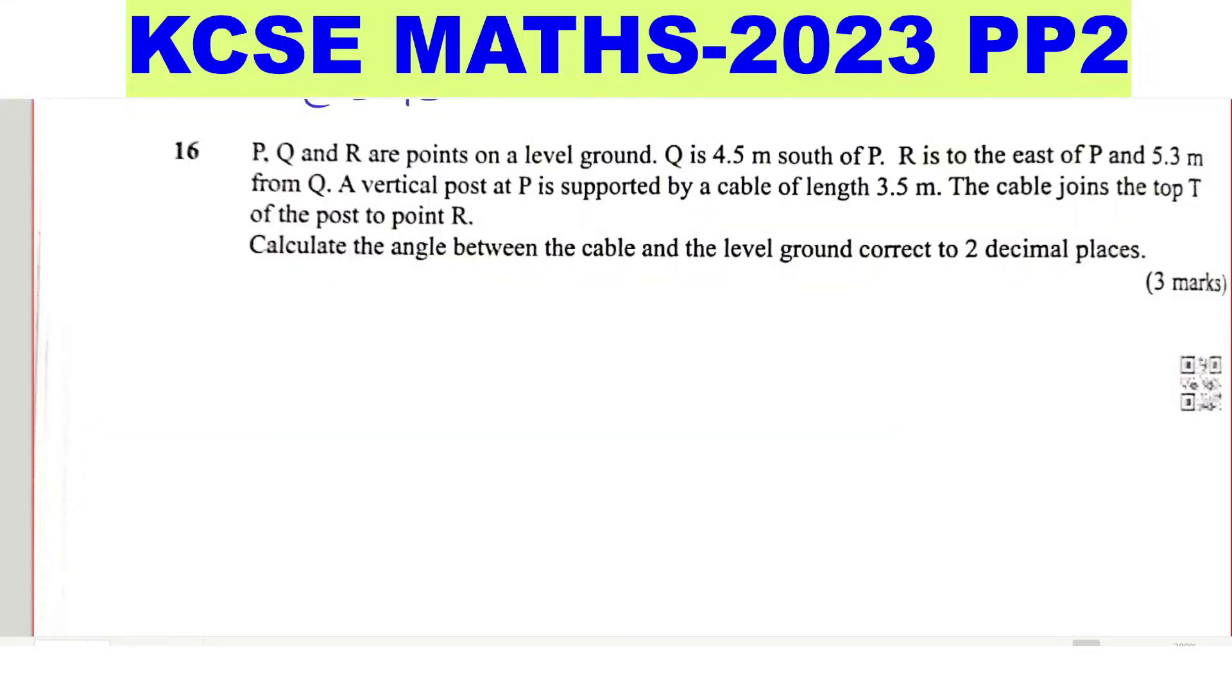Question 16. P, Q and R are points on a level ground. Q is 4.5 meters south of P. R is to the east of P and 5.3 meters from Q. A vertical post at P is supported by a cable of length 3.5 meters. The cable joins the top T of the post to point R. Calculate the angle between the cable and the level ground correct to two decimal places.